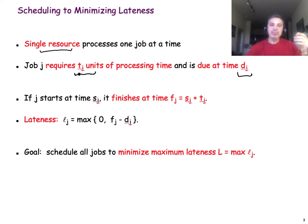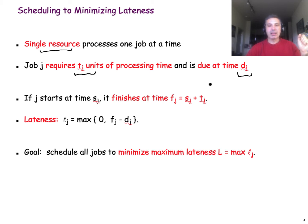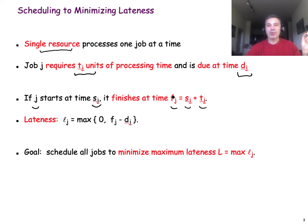For job j, you know its duration tj, and you know when it is due. But these deadlines, as we will see, are actually soft. What does that mean? If you start a job j at time sj, then it will finish at sj plus the duration of the job. The question is whether that finish time is before or after the deadline. If it is before the deadline, the deadline has been met and there is no penalty.